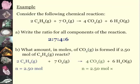I'm going to multiply it by wanted over given. I want the 4 and I'm given the 2, which means that 5 moles of carbon dioxide are produced.